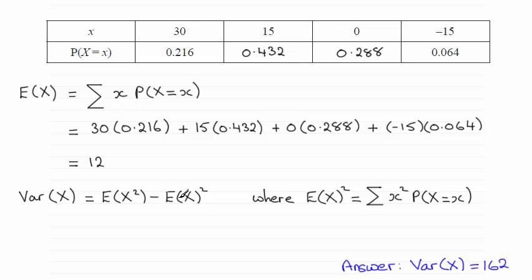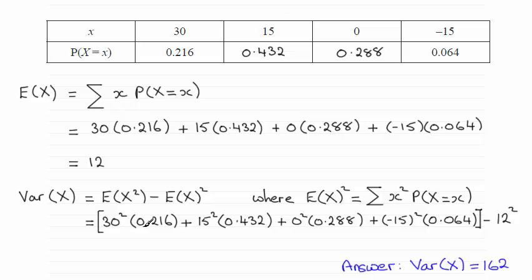And then take away E(X) all squared. So if you do that, this is the sum that you should be working out. And if you work that out, you'll find that E(X²) turns out to be 306.